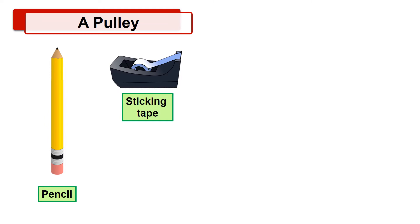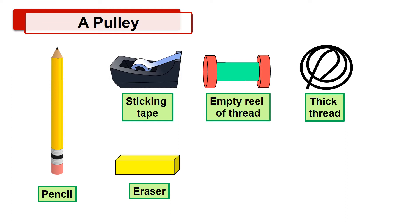A pulley. To know what exactly a pulley is, we will do a simple experiment. For this, we require a pencil, sticking tape, an empty reel of thread, half meter thick thread, a weight such as an eraser that can be tied to the thread, and play dough.